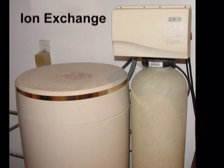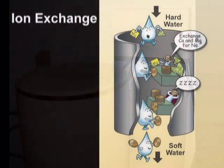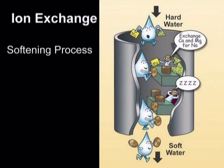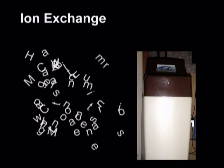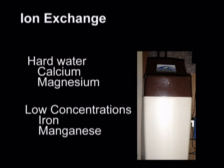Ion exchange water softening is a common point-of-entry treatment. An ion exchange water softener replaces contaminants in water with sodium. Ion exchange water softeners should be considered for management of hard water, calcium, and magnesium. They may also manage low concentrations of iron and manganese.